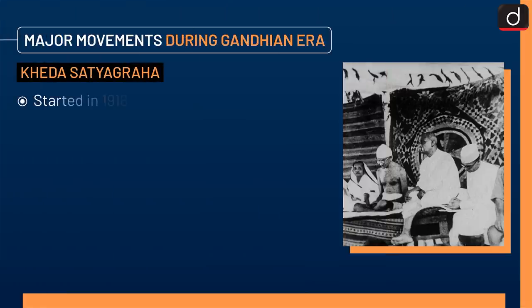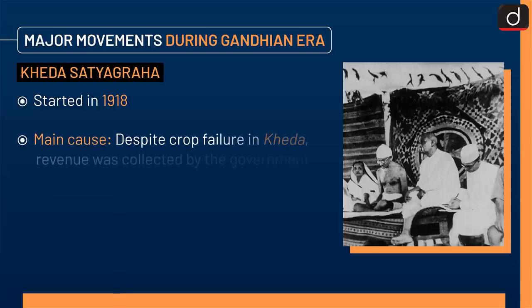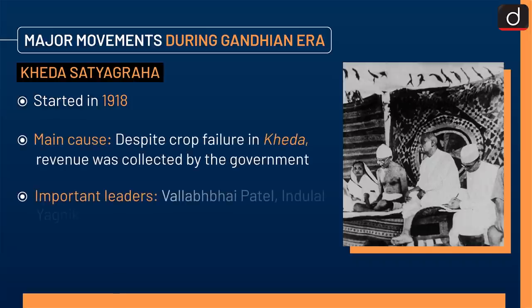Next is the Kheda Satyagraha, which started in 1918. The main cause was that despite crop failure in Kheda, revenue was being collected by the government. Important leaders were Vallabhbhai Patel and Indulal Yagnik.